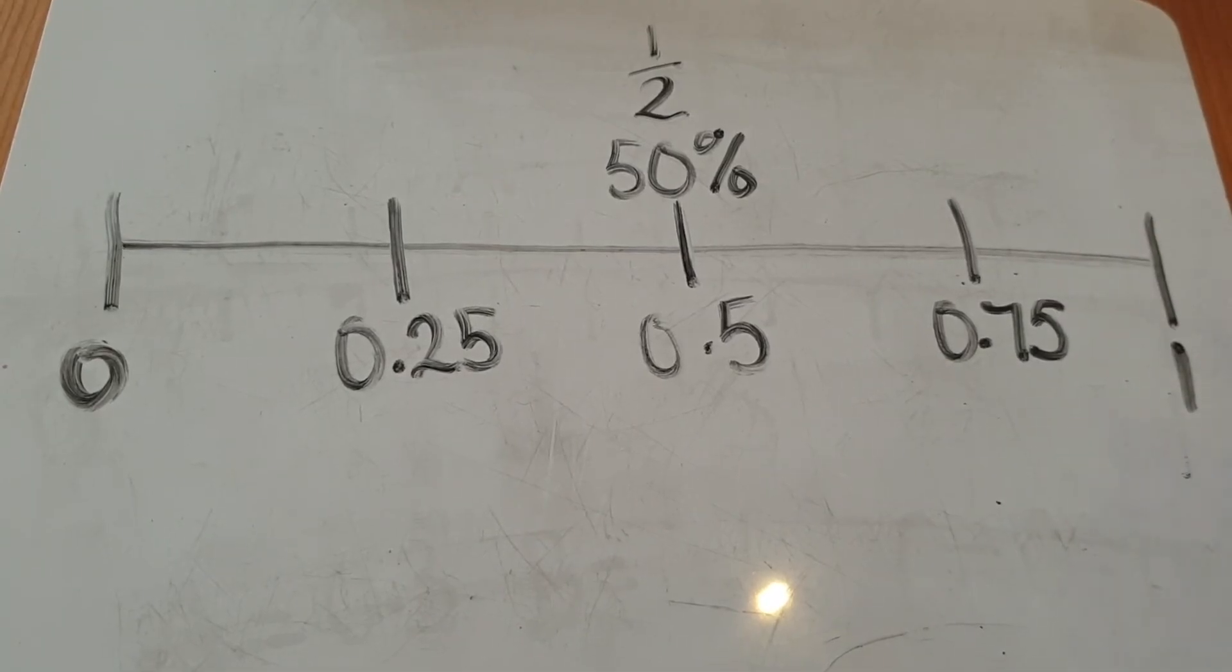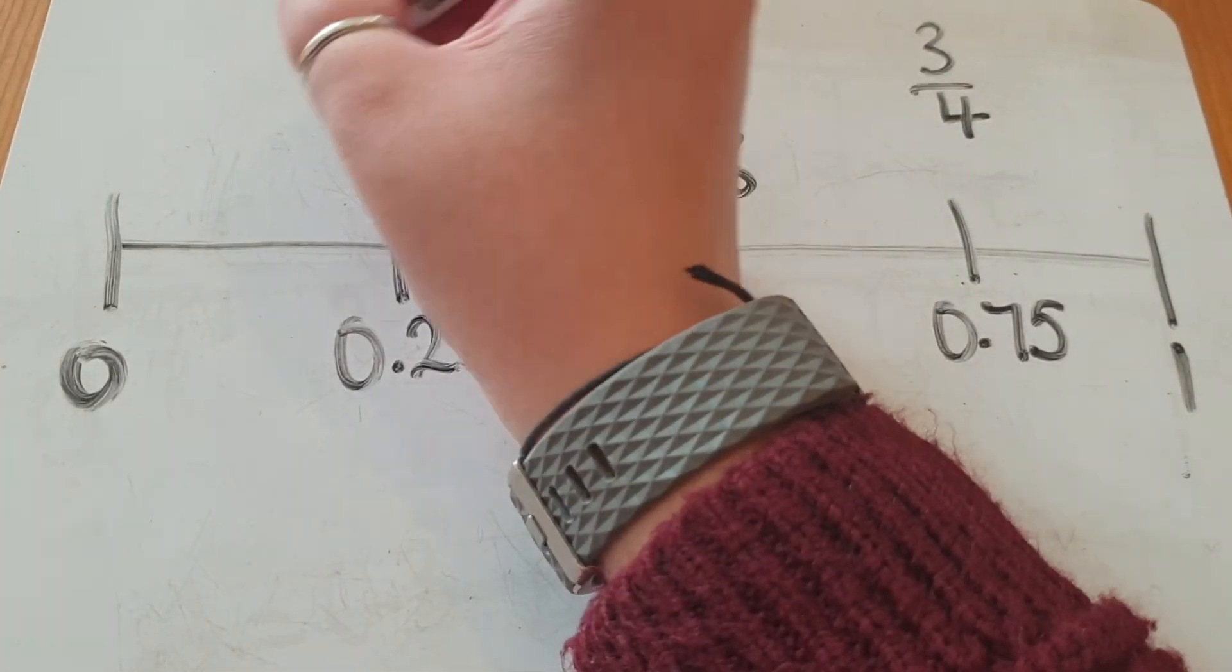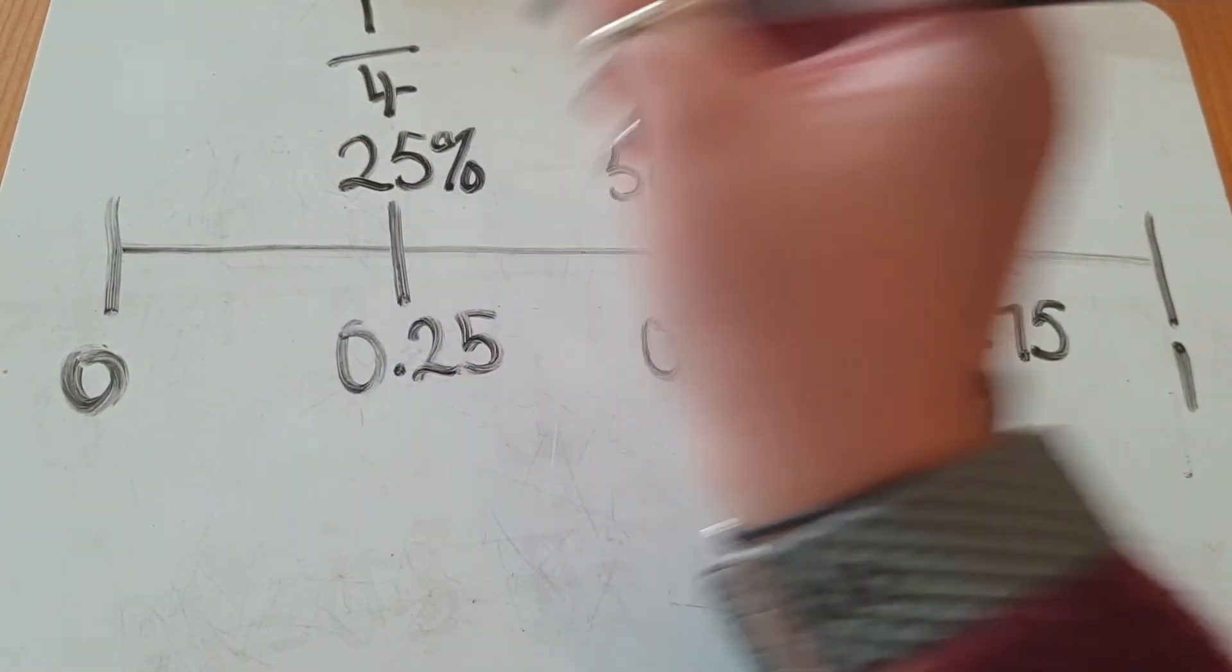This number line can be used to find 0.25 and 0.75 as a fraction and a percentage as well.